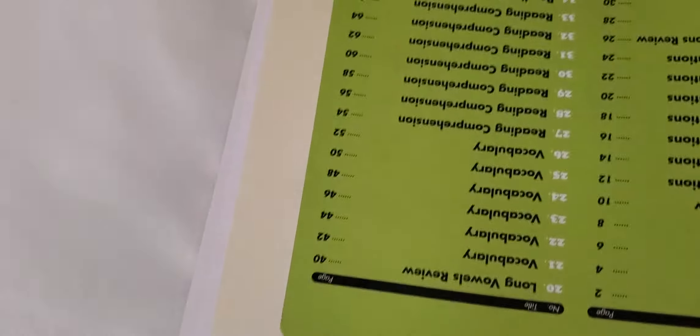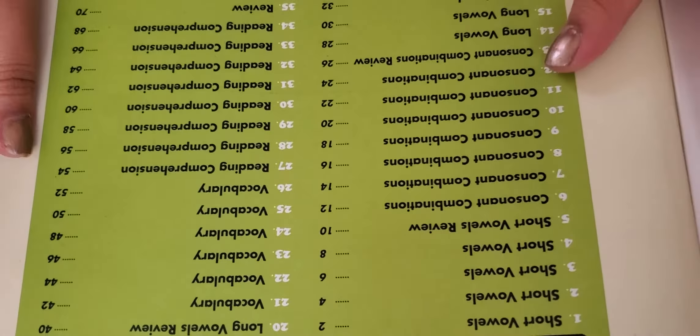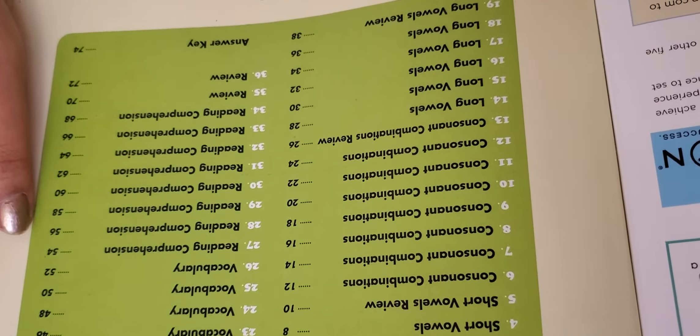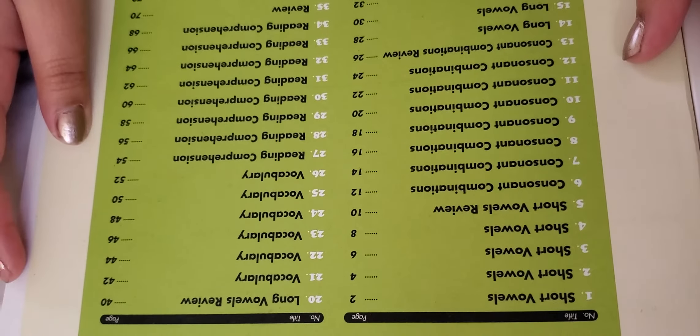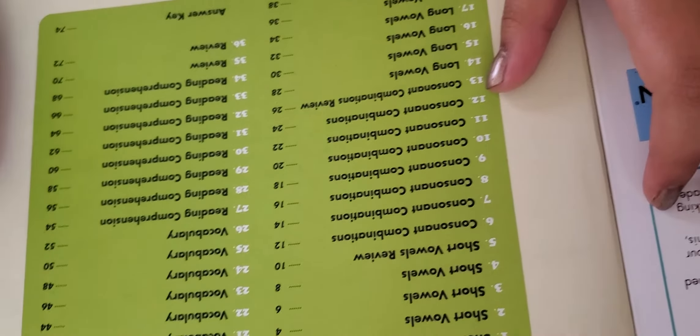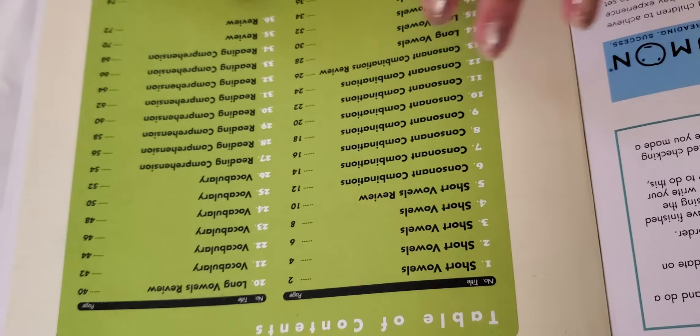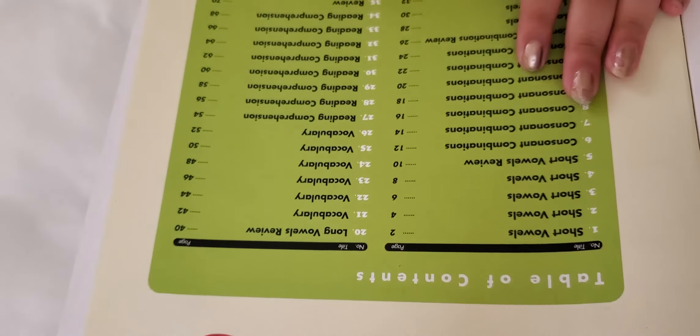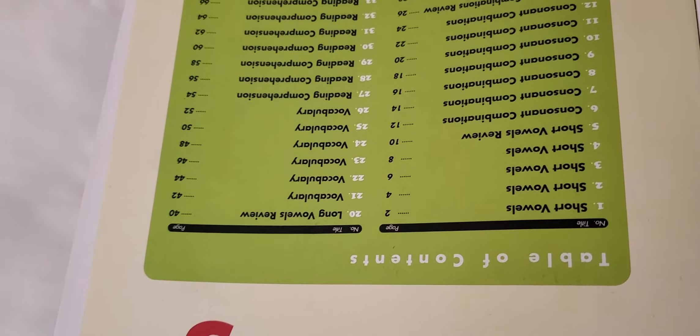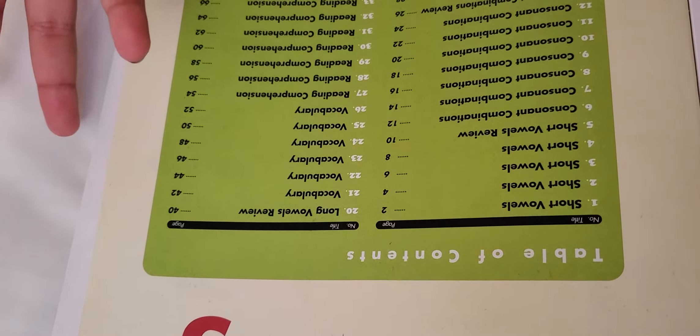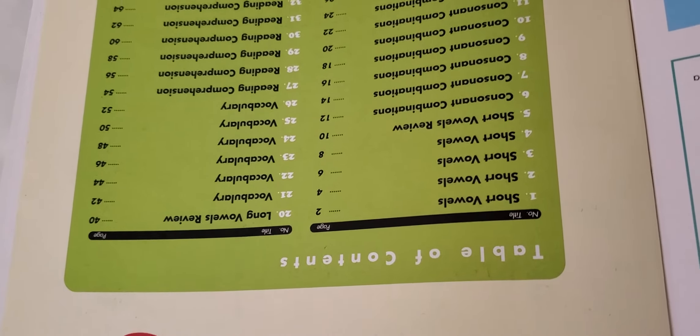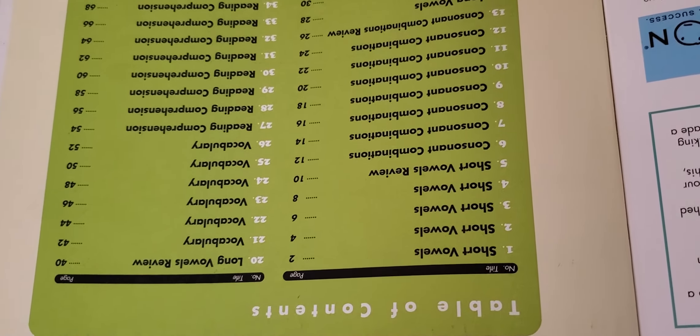So let's now see the table of contents. They have all the short vowels, consonant combinations, long vowels, long vowels review, vocabulary, reading comprehension, and review. And they've also got the answer key, and it's all the way up to 36, and that means it's the 72nd page. And the answer key, that means all the answers of all these pages, it's in the 74th page. And it helped us. I did all these pages because I already did first grade.